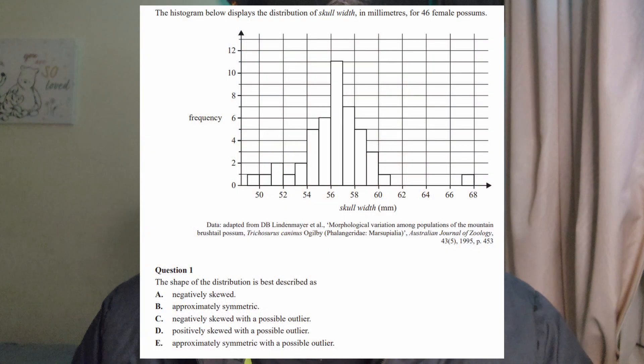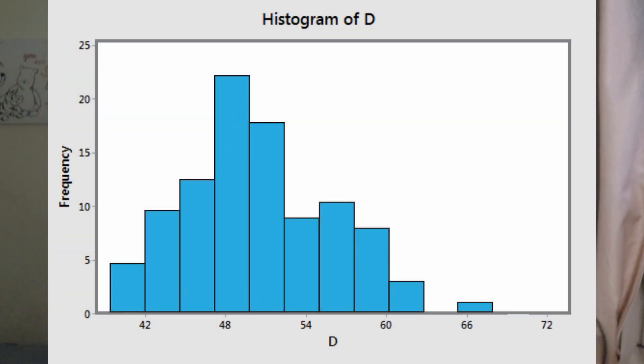In the same way, if the question asks you to describe the shape of a graph, check for outliers and then mention the presence of outliers. This can also work the other way around — sometimes a histogram will look like it has an outlier, but once you use the formula, you can confirm whether it was an outlier in the first place.